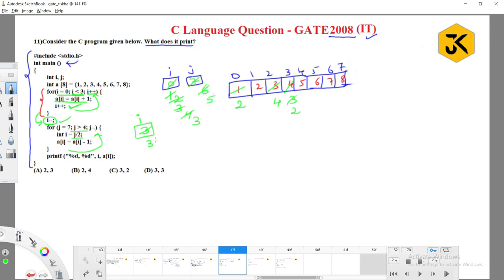Again j value decremented by one, that is five. Five greater than four? Yes. Then i equals j by two. Five by two is two. And a of i means a of two. a of two equals a of two minus one, that is three. Next j value decremented by one, that is four. Four greater than four? Condition false, it is going to exit the particular block.